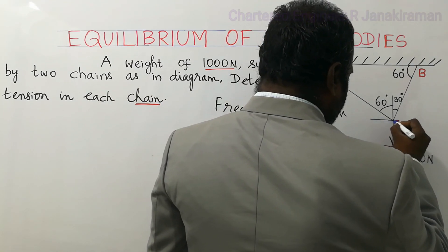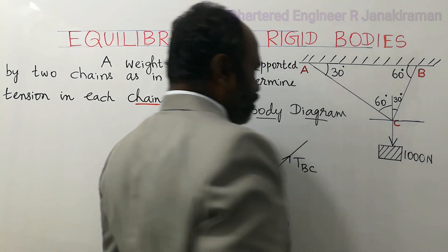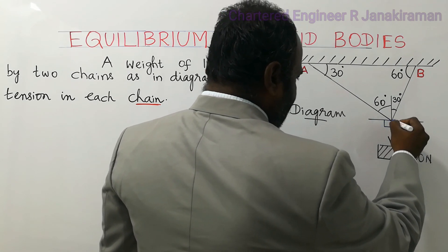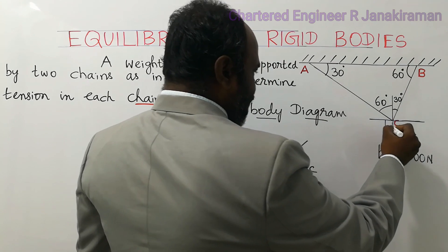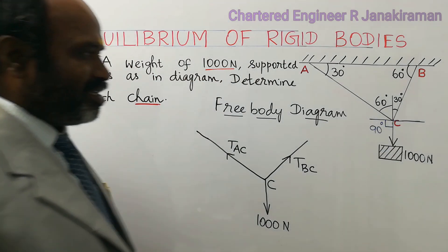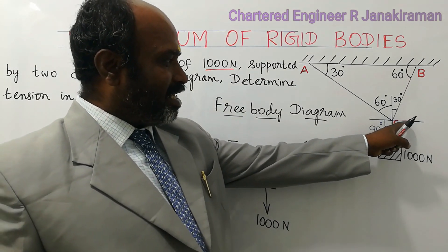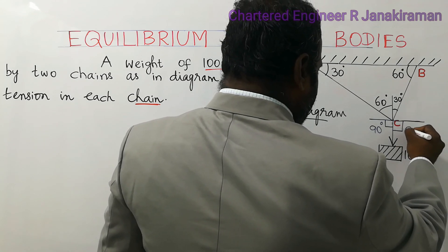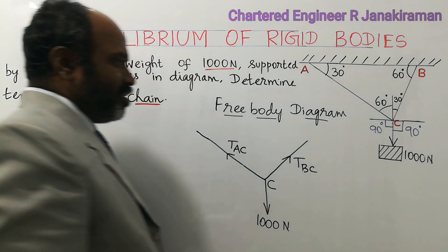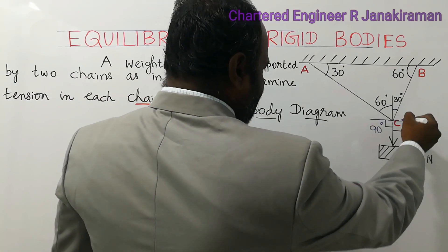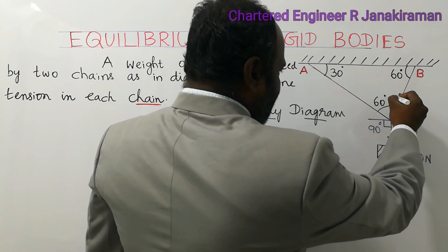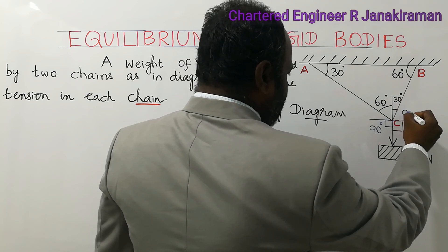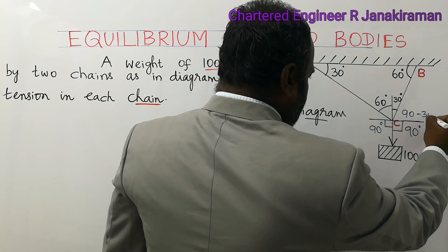Let me draw a line passing through point C as a horizontal line. We are going to find this angle. This is 90 degrees — it is a quadrant, this is the vertical line and this is the horizontal line. So this angle will be 90 degrees. Looking at the right side: 90 minus 30 gives an angle of 60 degrees. On the left hand side, it is a quadrant: 90 minus 60 gives 30 degrees.